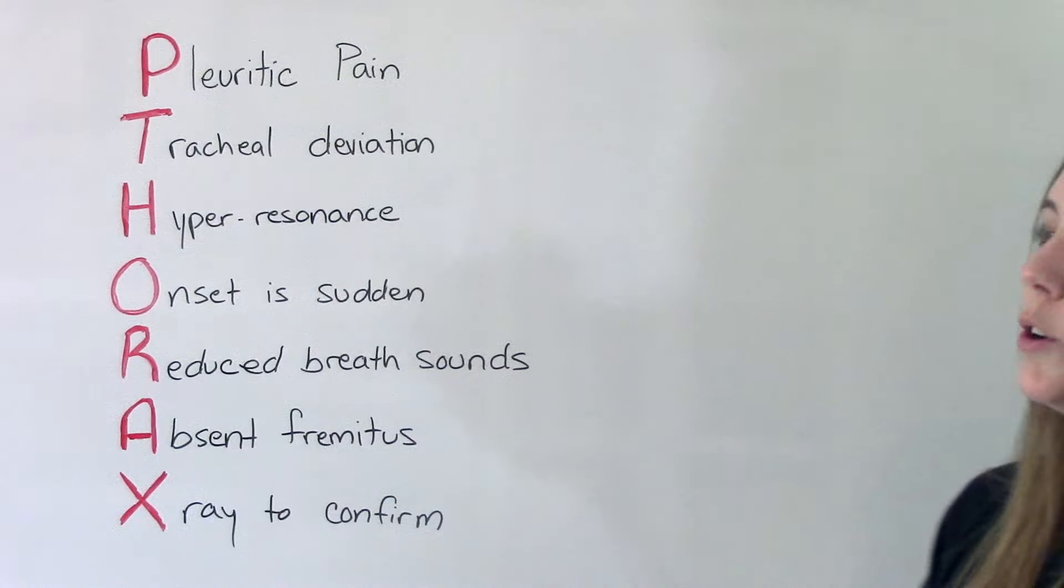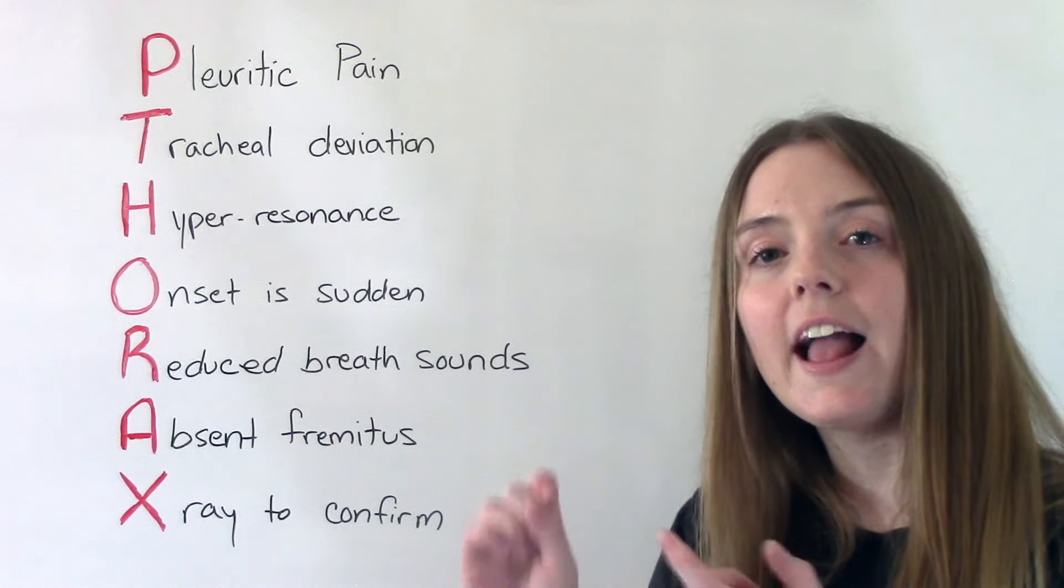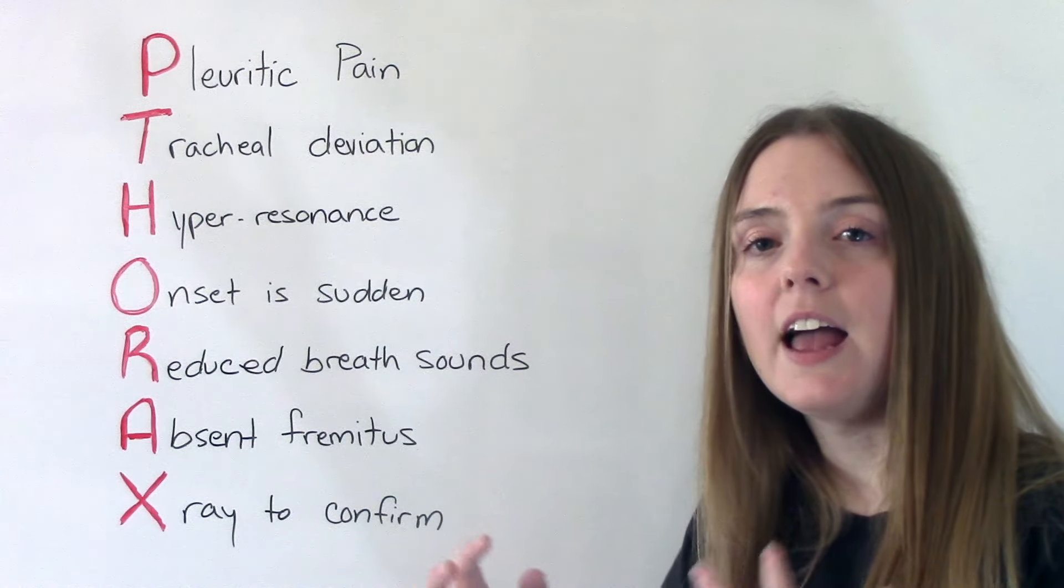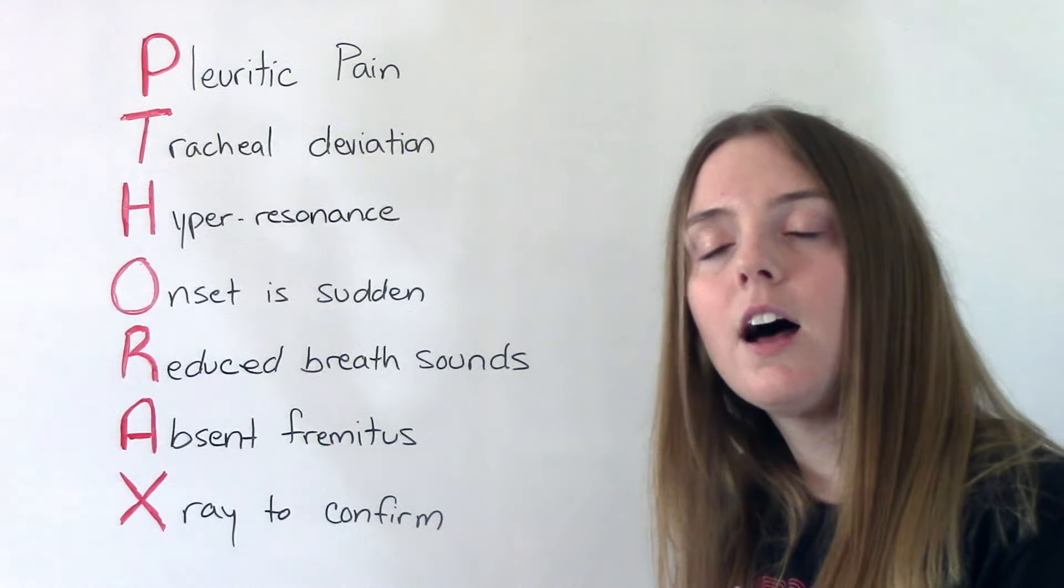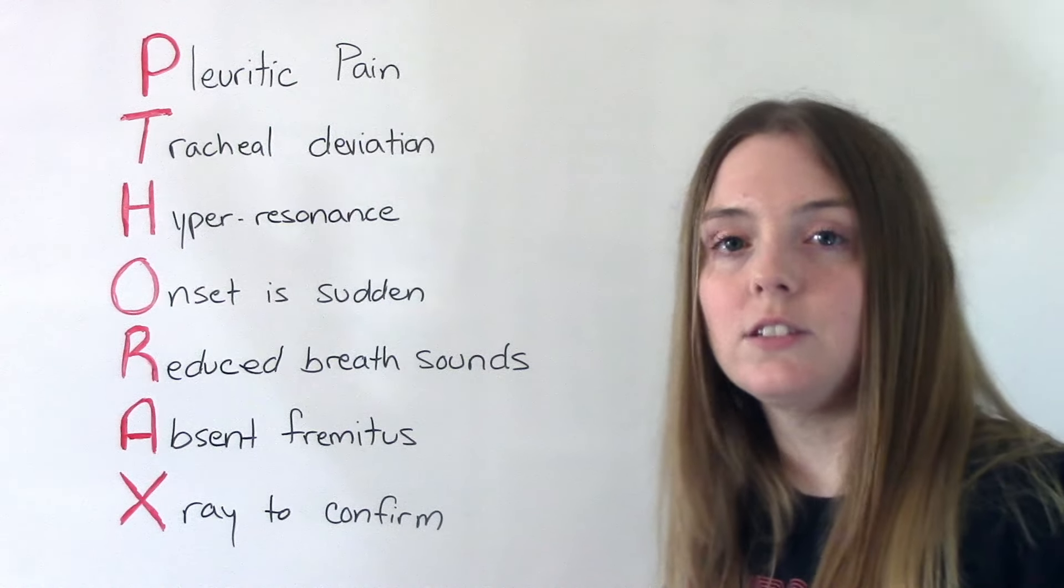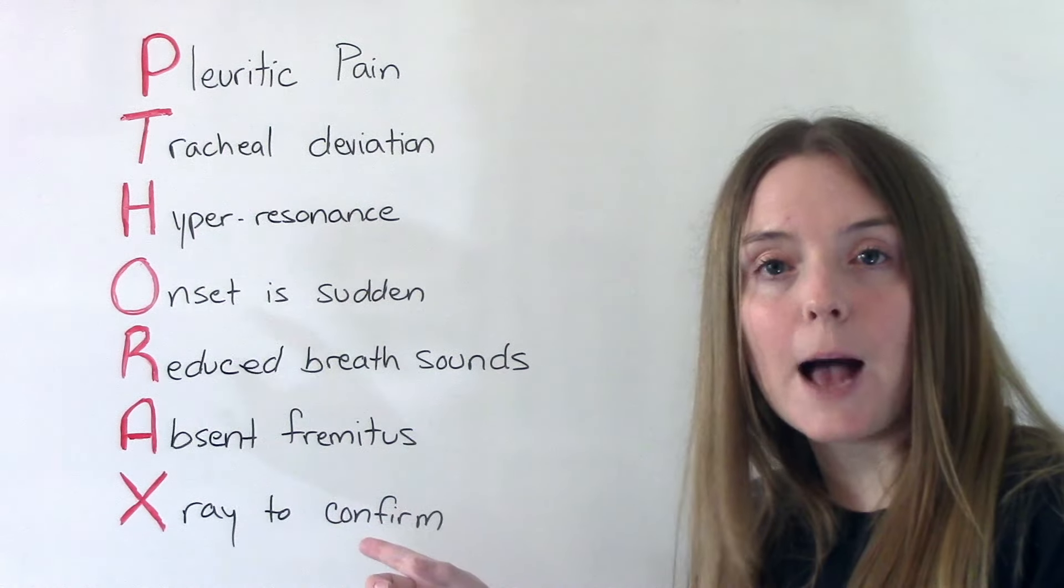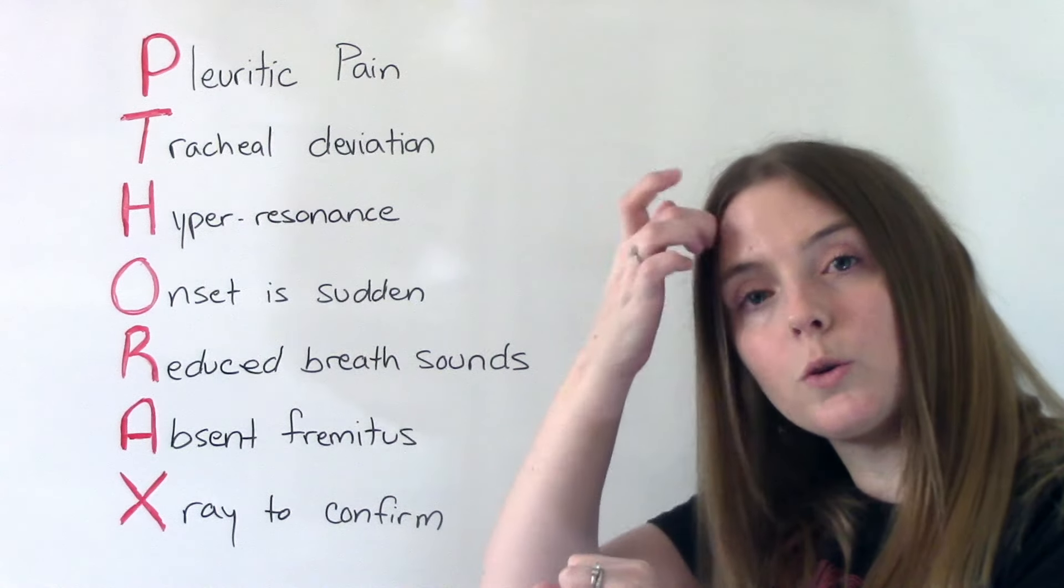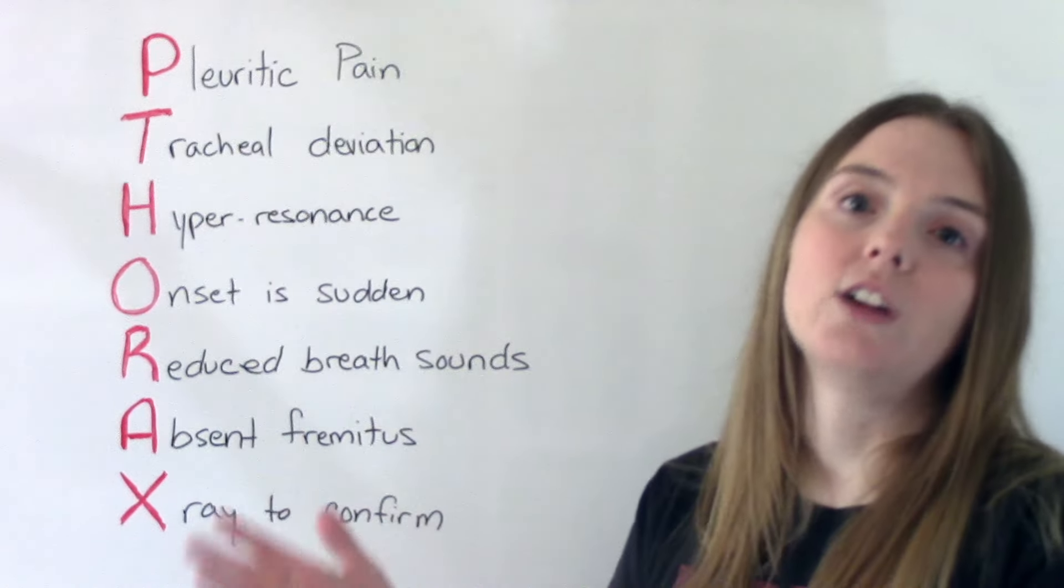A is absent fremitus. We have tactile and vocal fremitus. Vocal is when we're talking and we're hearing the sounds and the way that the sounds are changed by the chest - that's going to be absent. Or if we're touching, if we're palpating, it's also going to be absent because the lung has collapsed.